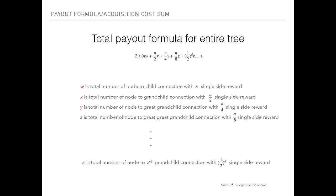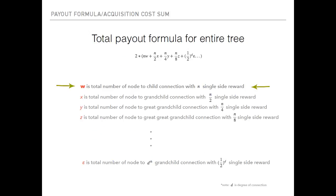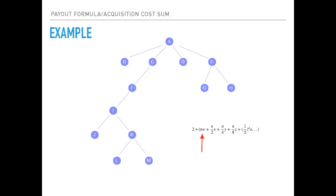To calculate it, you just follow the formula. Take a look at the formula and the page for a second here. All right, first thing first, we're going to calculate the nW. What nW is: W is the total number of node-to-child connections, and the keyword is node-to-child connection. Remember this. With N single side reward.